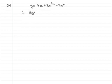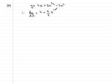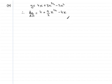So therefore if we differentiate, dy/dx equals: the differential of 4x is 4, then plus 3 times 3/2 gives 9/2, drop the power by 1 so 3/2 minus 1 gives x to the power 1/2, then on the third term minus 2 times 2 is minus 4, drop the power by 1 giving x to the power 1, so we just leave it as minus 4x.